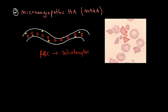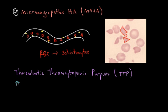Two of the major causes of MHA also have long names: thrombotic thrombocytopenic purpura, or TTP, and disseminated intravascular coagulation, or DIC.